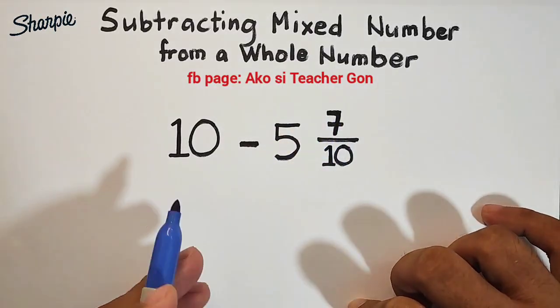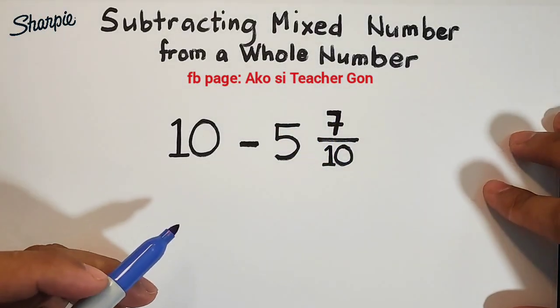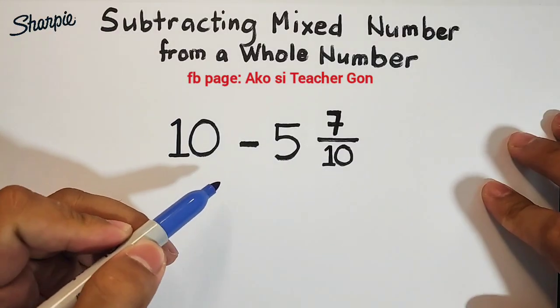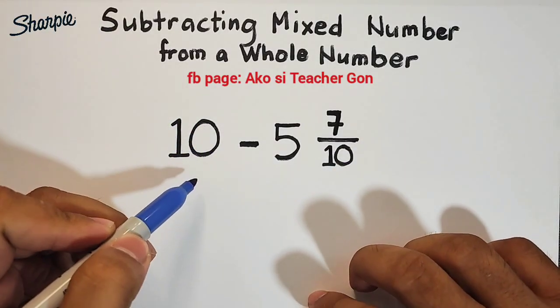So what we need to do is we will regroup this whole number. We will make this a mixed number by regrouping.